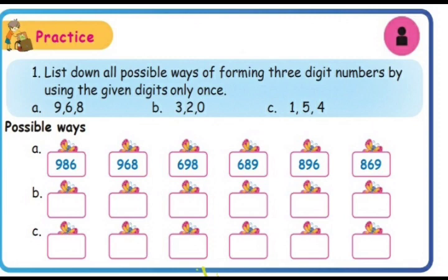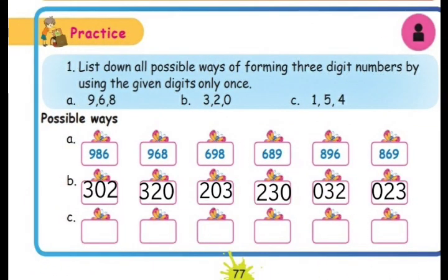Second practice question using the digits 3, 2, and 0. Keeping 3 as the first digit: 3 0 2 or 3 2 0. Keeping 2 as the first digit: 2 0 3 or 2 3 0. Keeping 0 as the first digit: 0 3 2 or 0 2 3.